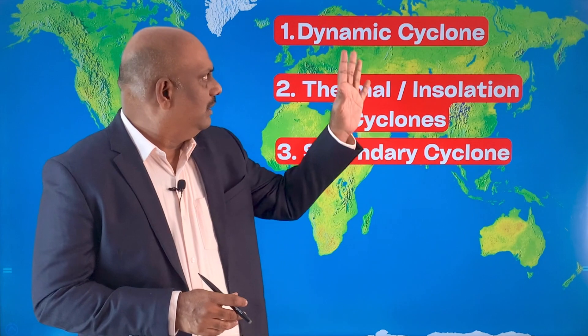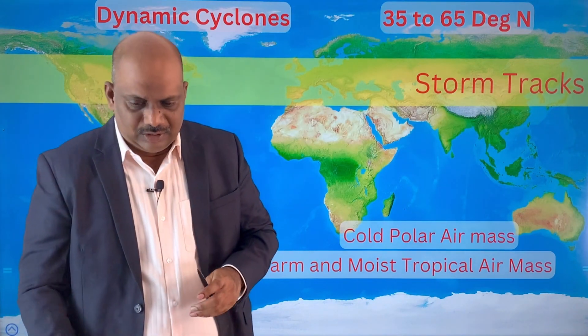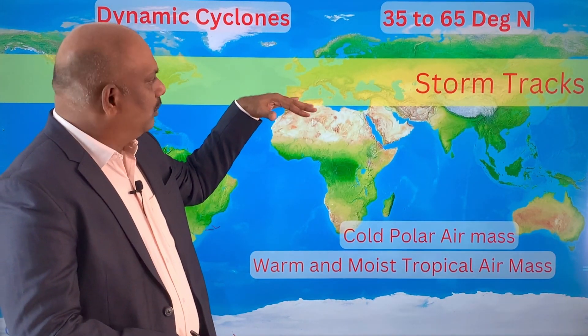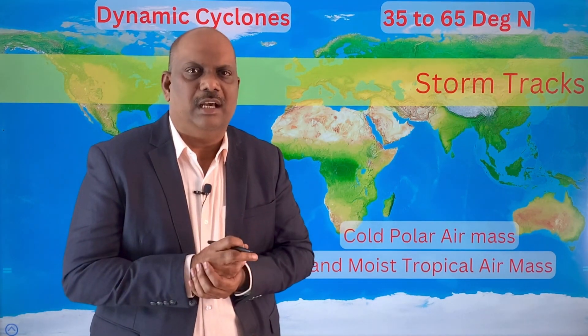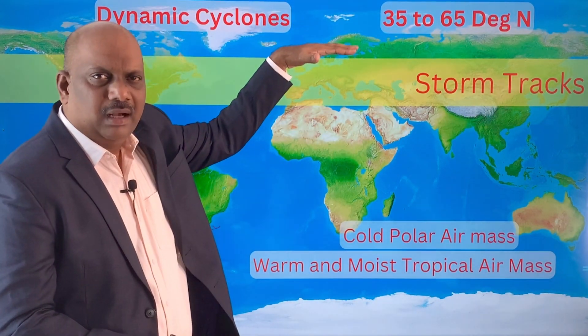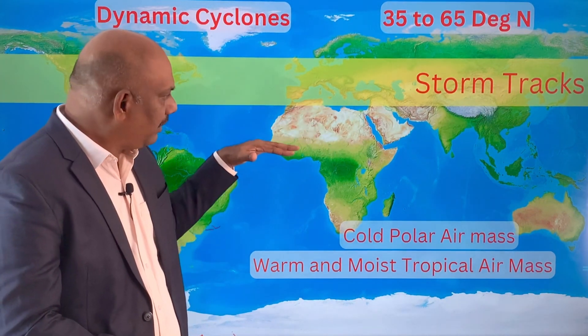Let us focus only on dynamic cyclones. The dynamic cyclone develops in the mid-latitudes, between 35° to 65° north latitudes. It is called a dynamic cyclone because it develops largely due to the confluence or convergence of two contrasting air masses: a cold arctic or polar air mass from the arctics, and a warm and moist maritime air mass from the tropics.